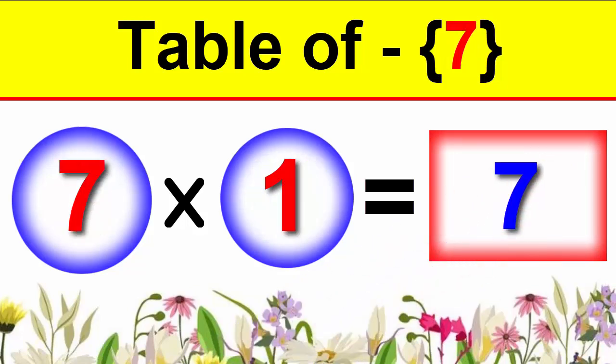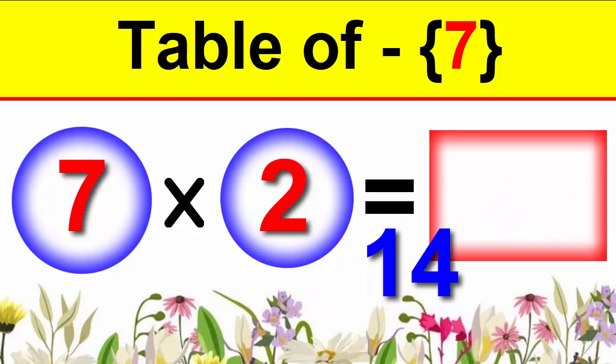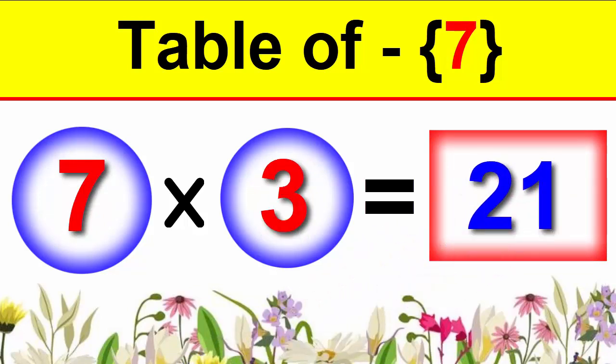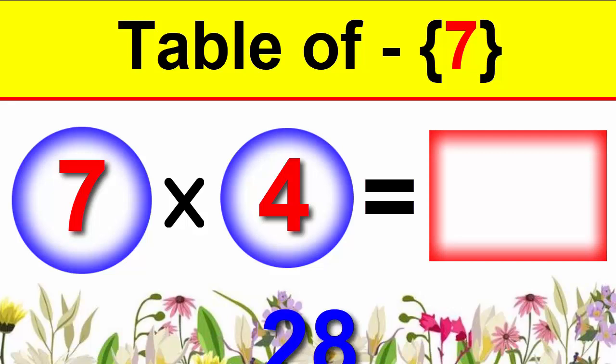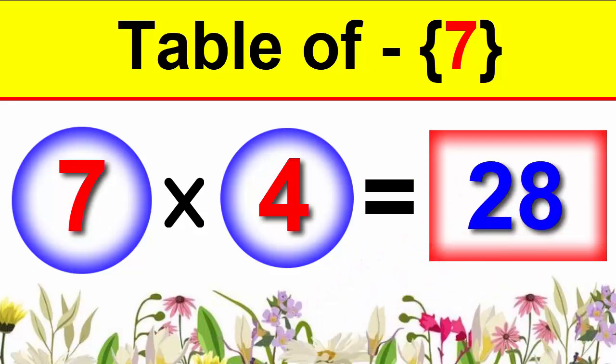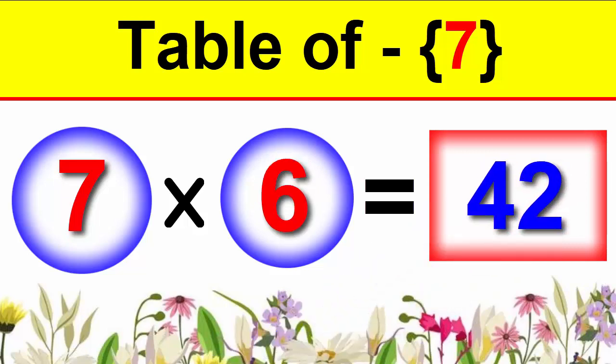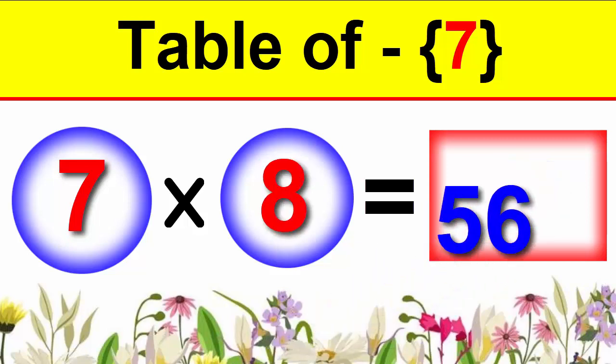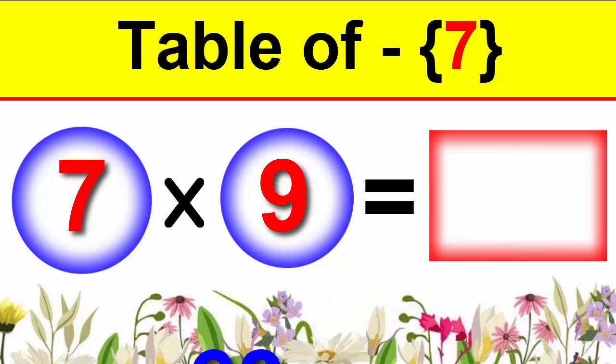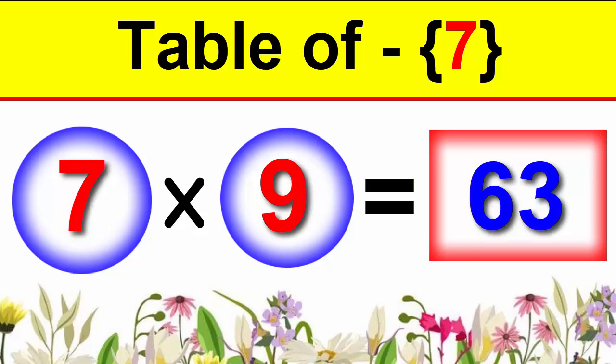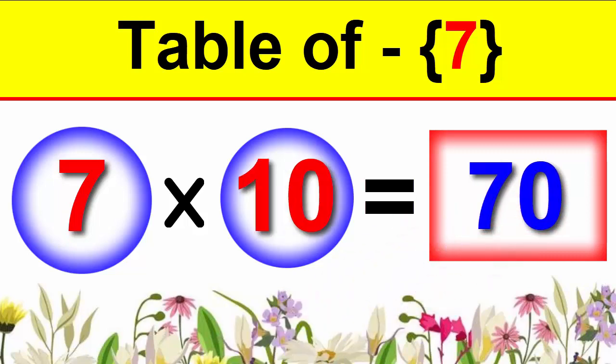7×1 is 7, 7×2 is 14, 7×3 is 21, 7×4 is 28, 7×5 is 35, 7×6 is 42, 7×7 is 49, 7×8 is 56, 7×9 is 63, 7×10 is 70.